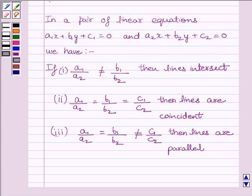First of all, we should understand that in a pair of linear equations A1x plus B1y plus C1 equals 0 and A2x plus B2y plus C2 equals 0, we have: if A1 upon A2 is not equal to B1 upon B2, then lines intersect each other.